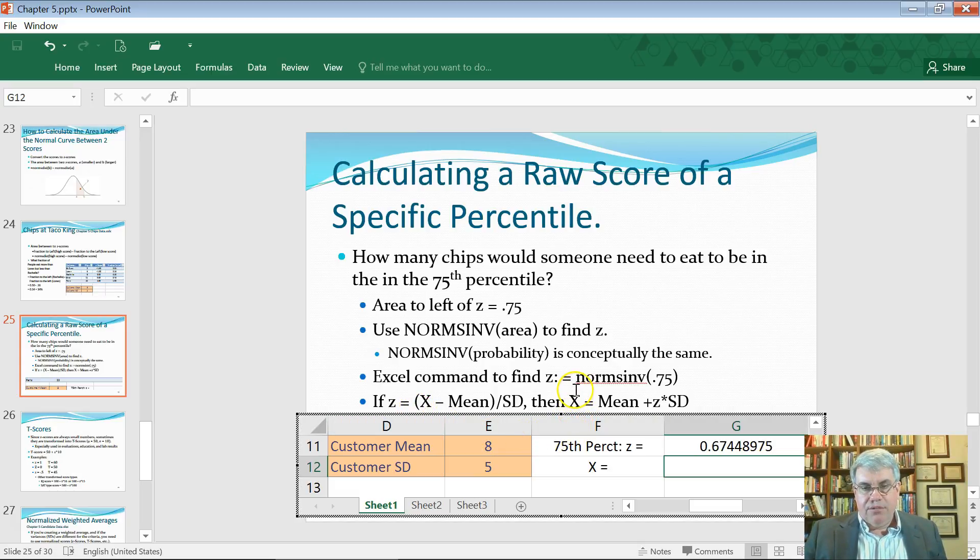If we do some algebra there, that means that the raw score is going to equal the average number of chips plus z times the standard deviation. So for us it's going to equal - now I could put the cells in here, I could put e11 for the mean, but I'm just going to put eight to make it a little simple.